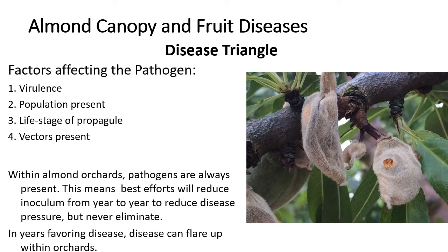The pathogen also must be present in order to have disease, and it needs to be present within a life stage that can infect the plant. More virulent or aggressive pathogens will increase the amount of disease, while less virulent pathogens will cause less. The higher the population of the pathogen present, the more disease we should expect. Vectors may help move the pathogen from one tree to the next, as in the case of ceratocystis, in which fruit flies transfer the disease from one damaged tree to the next. This side of the triangle is best considered to be always present. Our actions may help reduce the amount of overwintering or over-summering inoculum, but most likely we will not be able to eradicate the disease, except on a few occasions.